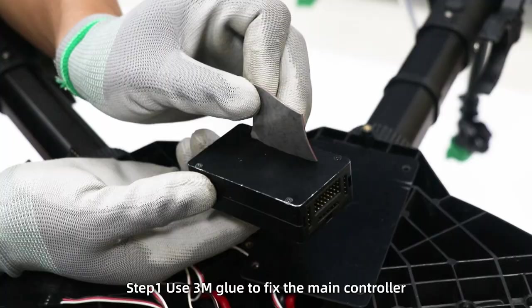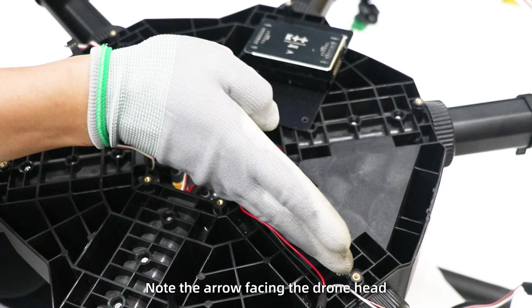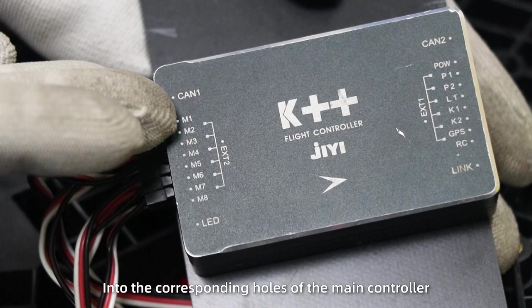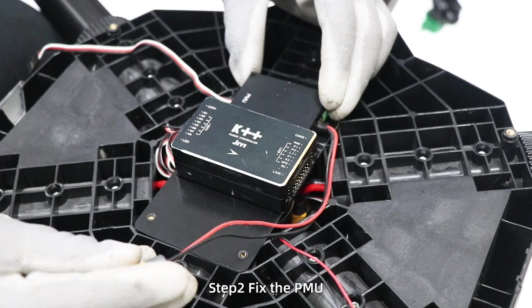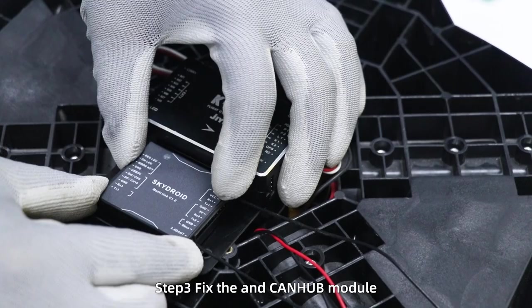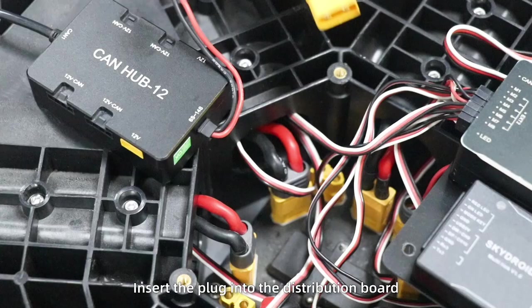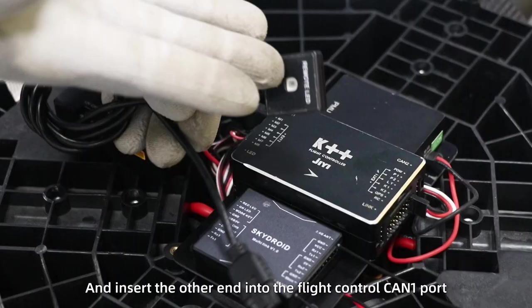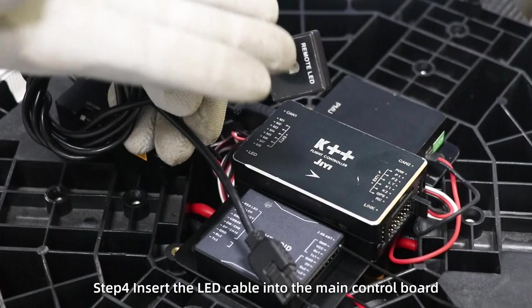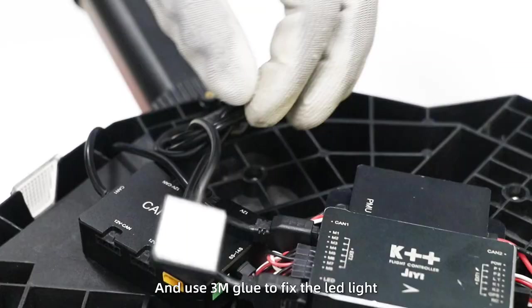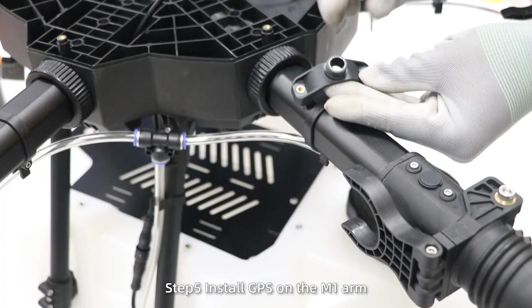Install flight control. Step 1: Use 3M glue to fix the main controller in the middle of the board. Note the arrow facing the drone head and insert the M1 to M6 motor signal wires into the corresponding holes of the main controller. Step 2: Fix the PMU. Insert the plug into the power distribution board and insert the signal wire into the power port. Step 3: Fix the receiver and CAN hub module. Insert the plug into the distribution board and insert the other end into the flight control CAN1 port. Step 4: Insert the LED cable into the main control board and use 3M glue to fix the LED light to the position of the tail light cover.